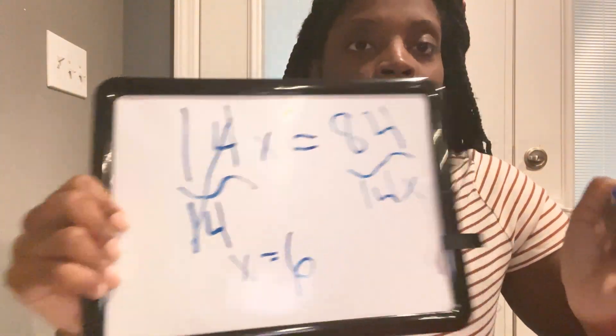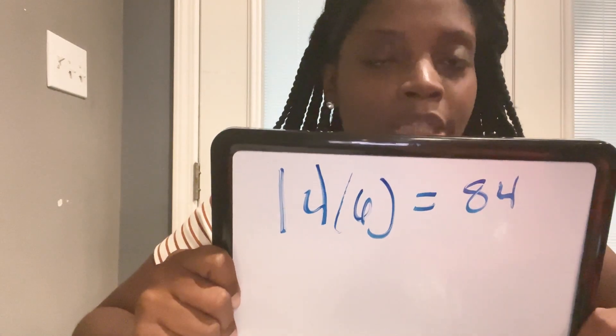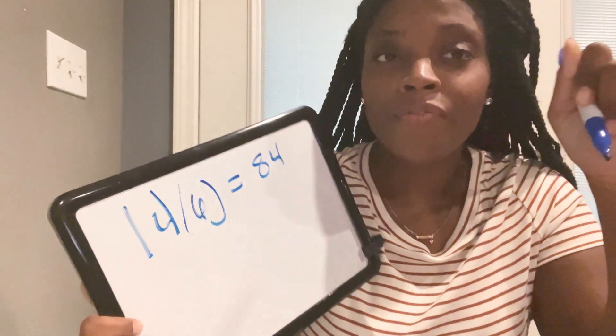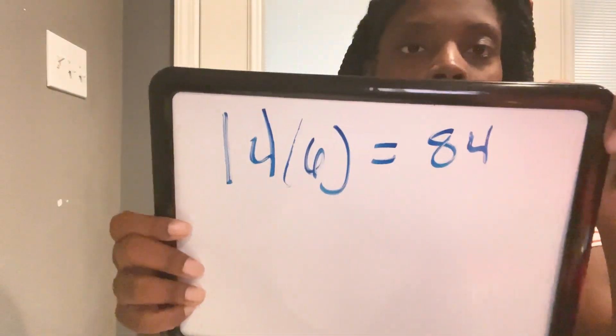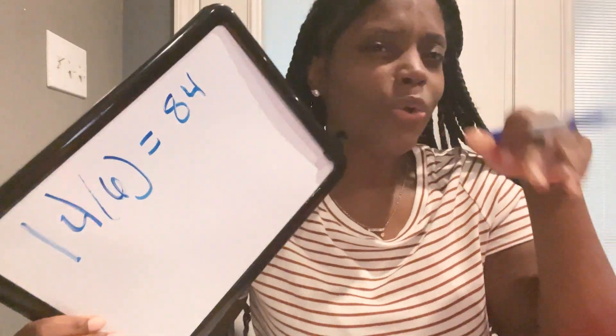You divide 84 by 14 and you get x equals 6. Now here's a tip — if you want to check yourself to see if the answer is right, plug it in. x equals 6, so 14 times 6 equals 84. If you got a different answer, it was not correct. For most multiple choice equations you can check the answer that way.